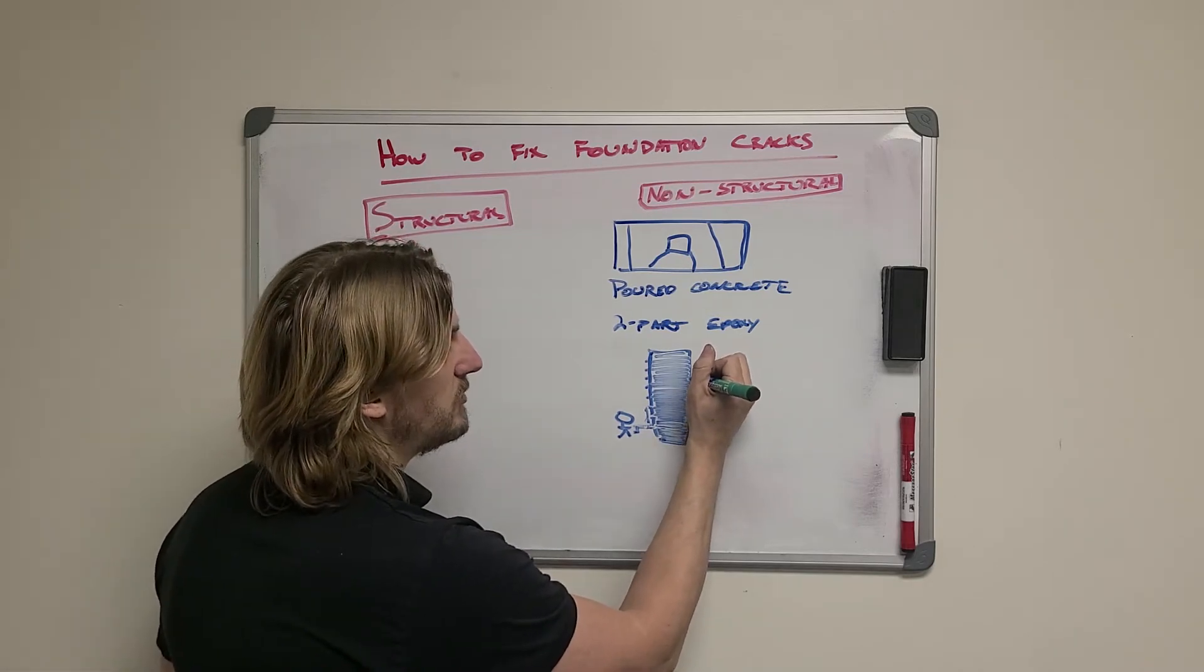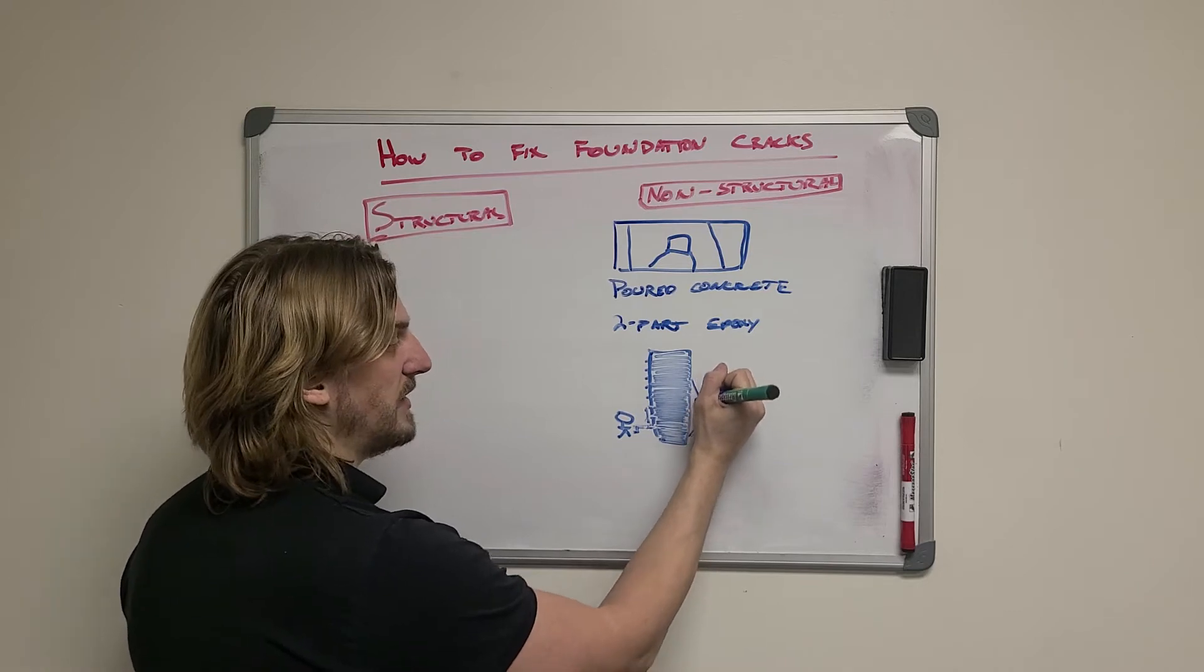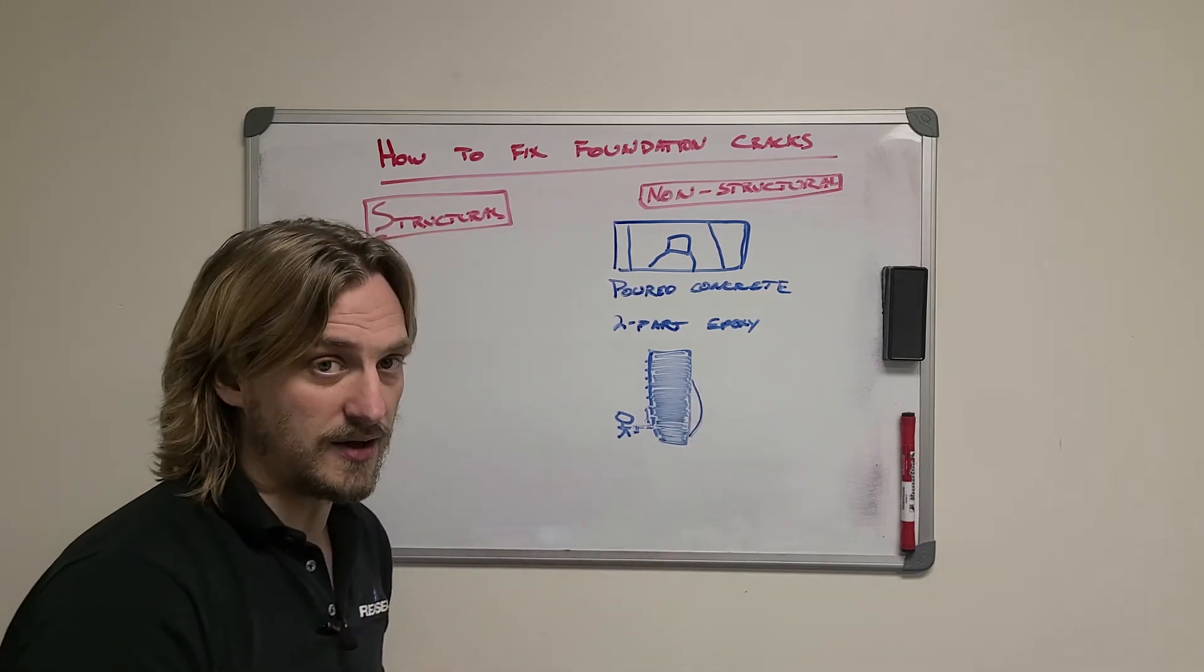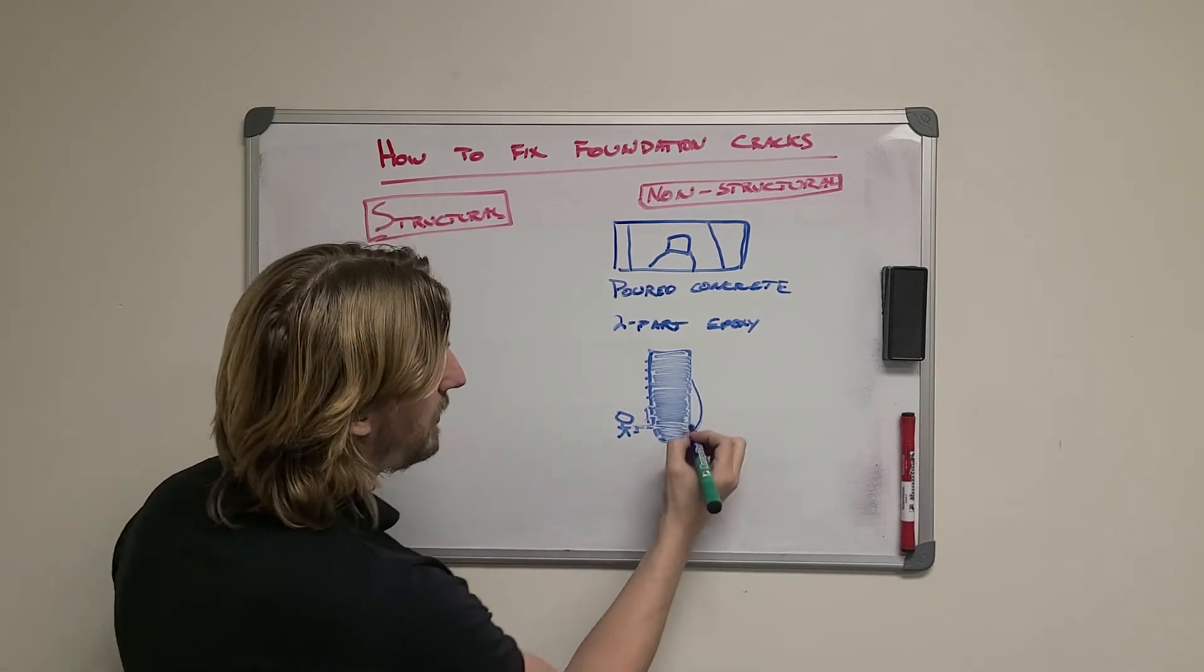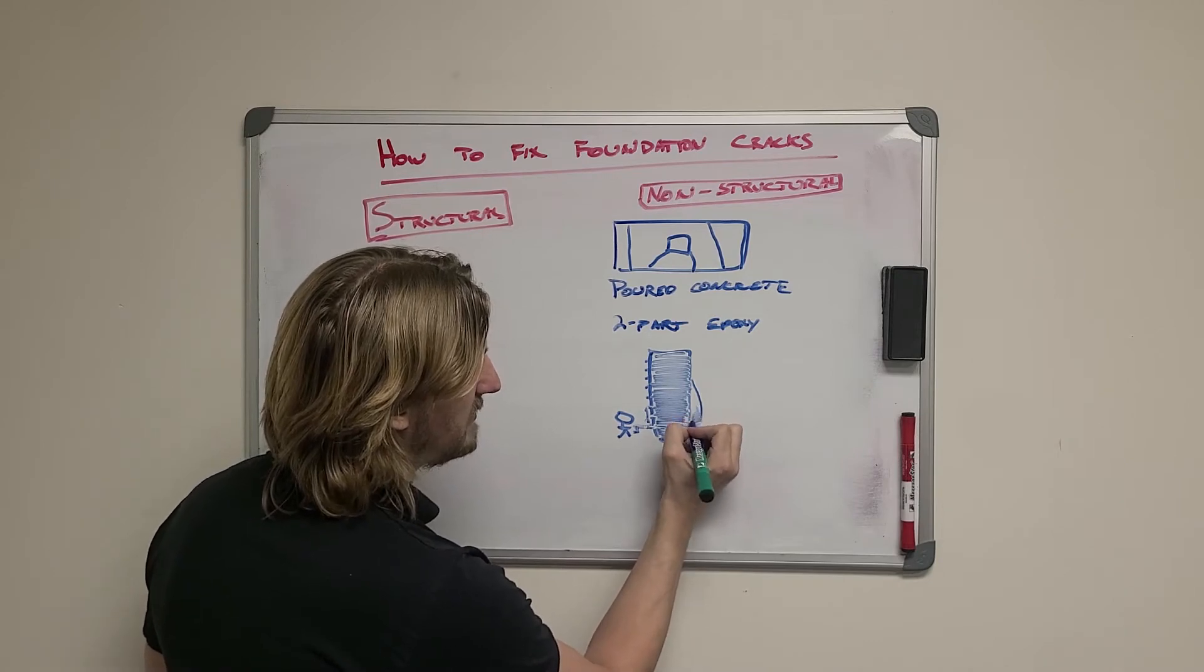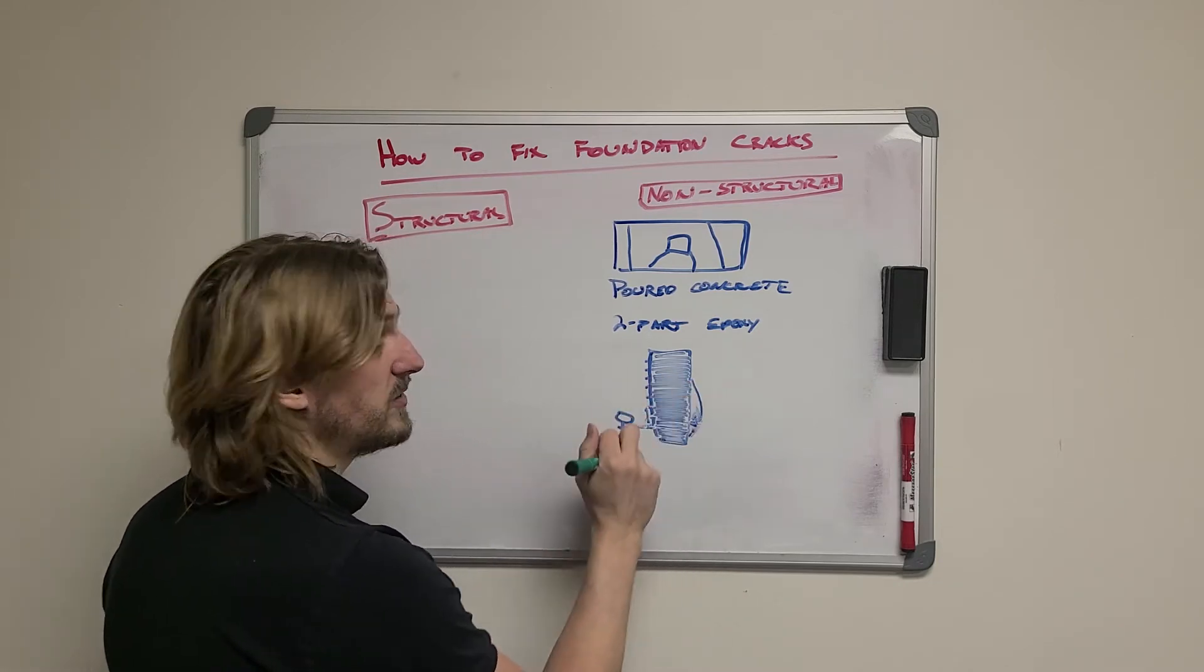One problem that you do run into with these is if you have a void. We call them little pockets on the other side of the wall and the epoxy can leak into these pockets and it can cause actually failure of the crack repair.